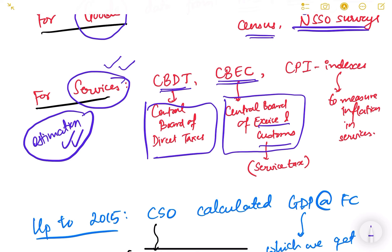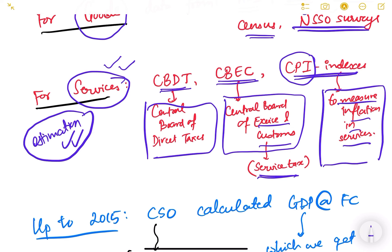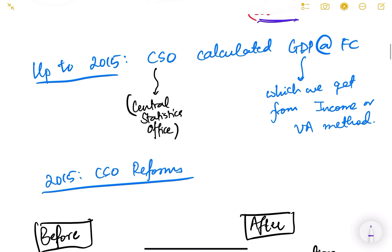The Central Board of Excise and Customs gives you the service tax. Then there are different indexes such as CPI — Consumer Price Index — to measure inflation in services. From the service inflation also, we get to know how much the service GDP has increased in our country.